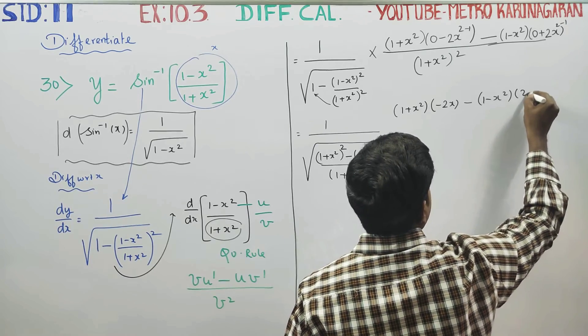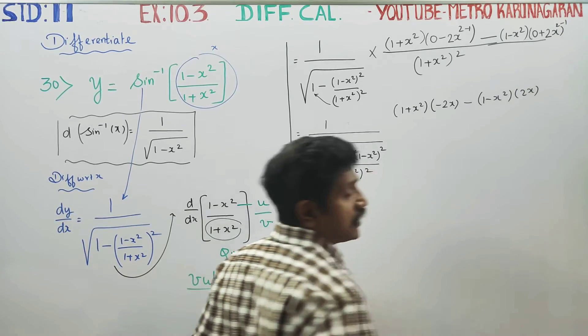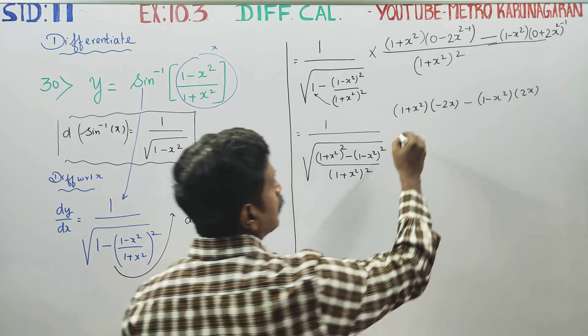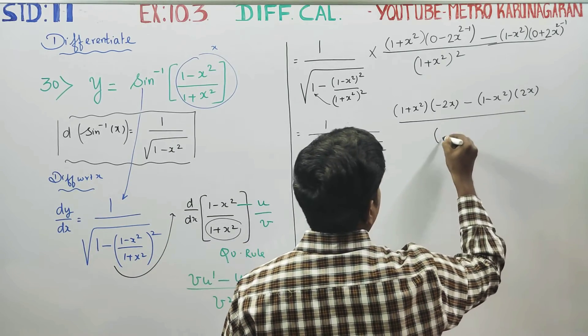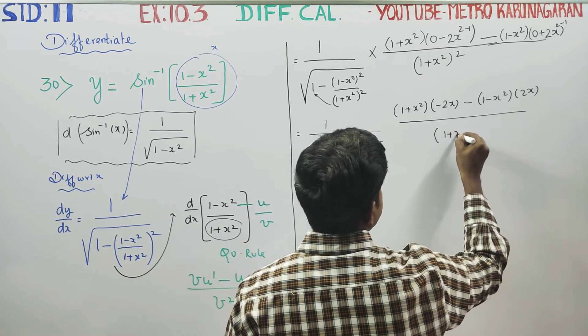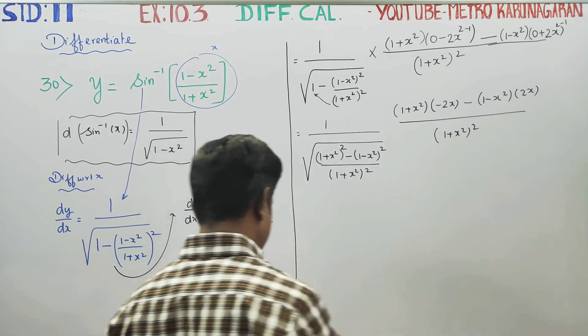You will be getting 2x raised to power 1. The whole expression is divided by (1 plus x square) whole square.